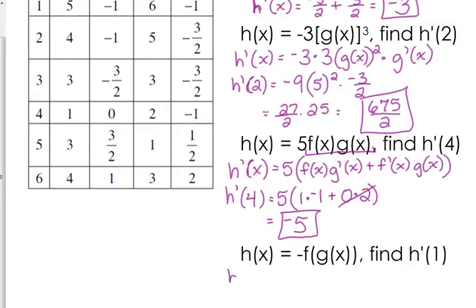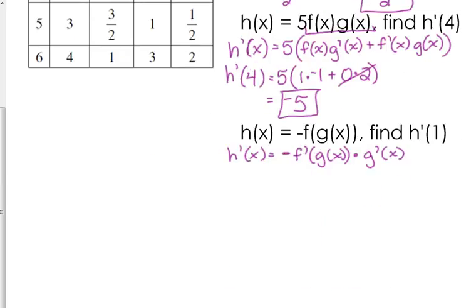One more chain rule: h prime of x is equal to — keep that negative out front, negative is like negative 1, it's a scalar multiple — negative of the outside times the derivative of the inside. So h prime of 1 is equal to negative f prime of g of 1 times g prime of 1.